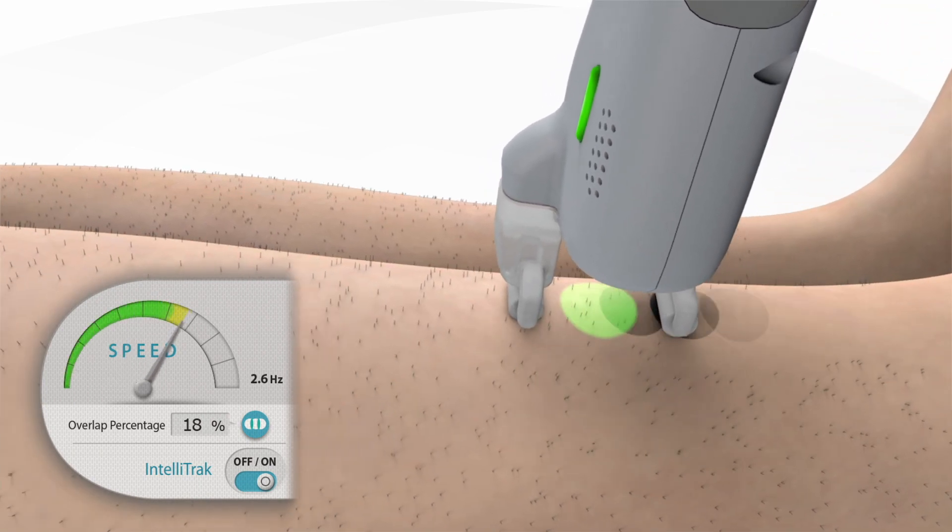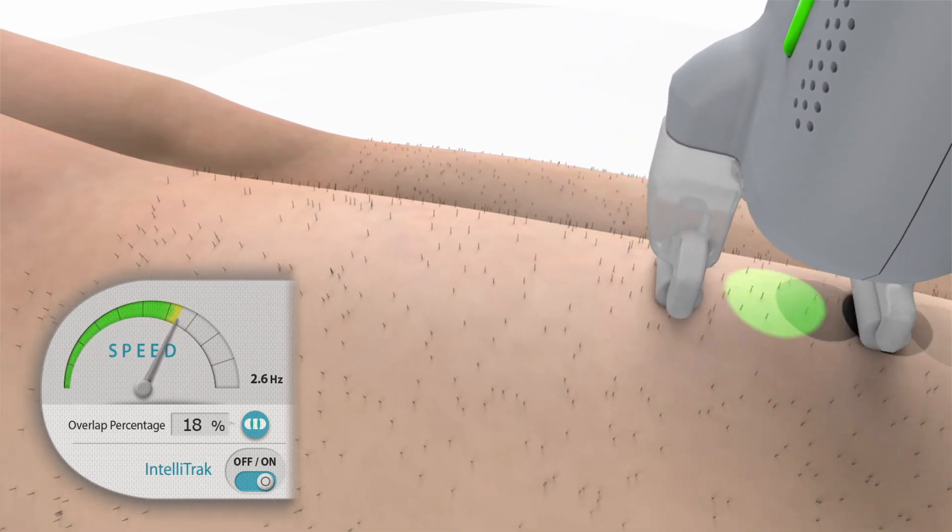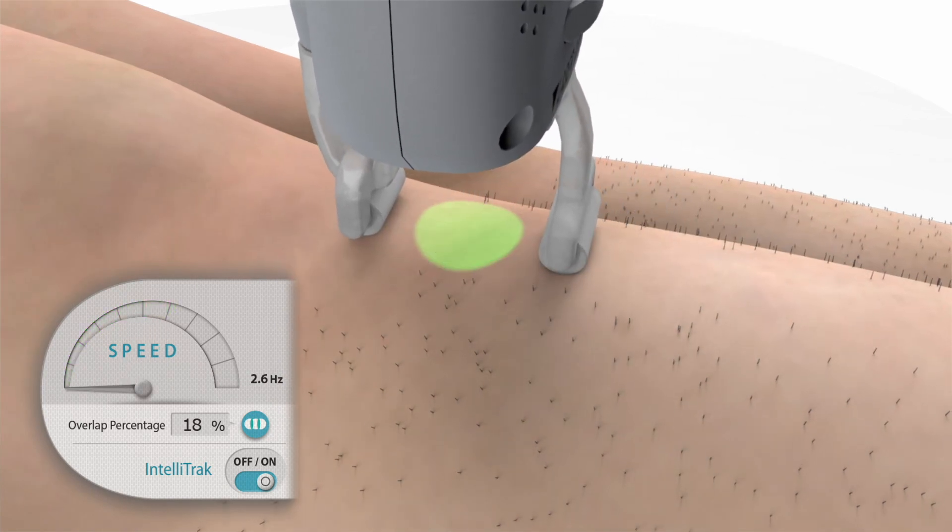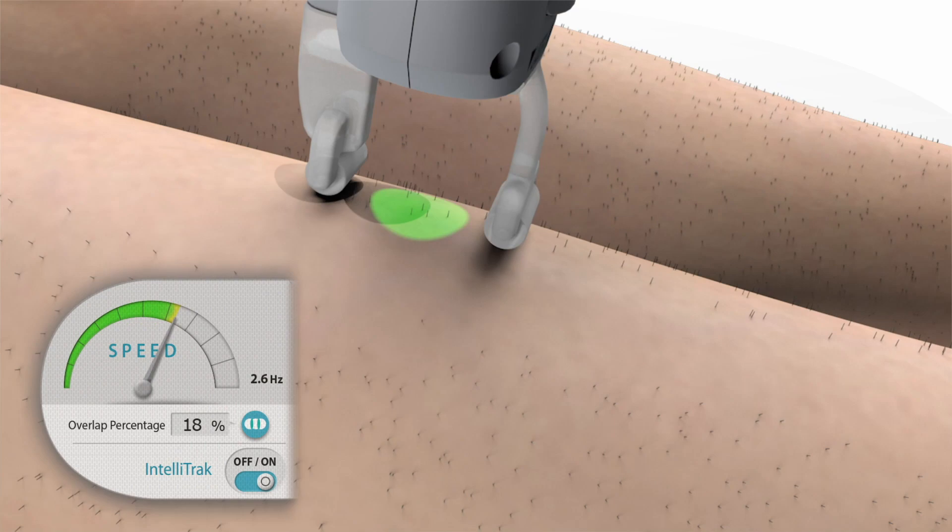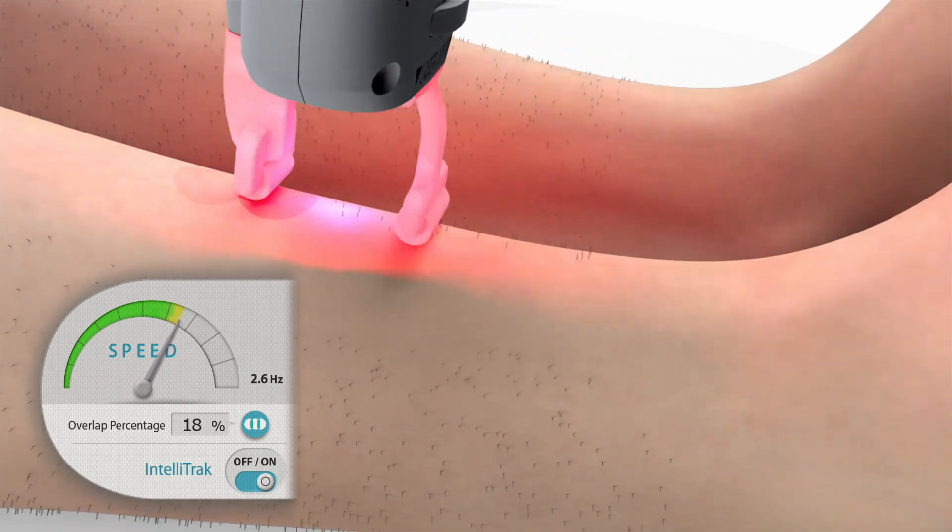Clarity 2's proprietary intelligent tracking provides more complete and consistent coverage, faster treatments on large areas, and delivers optimal results in fewer treatments, all benefiting you and your patients.